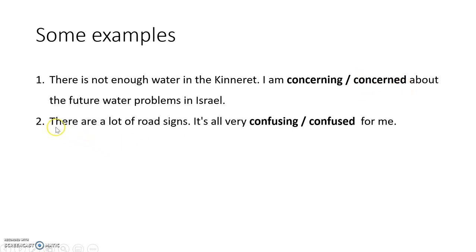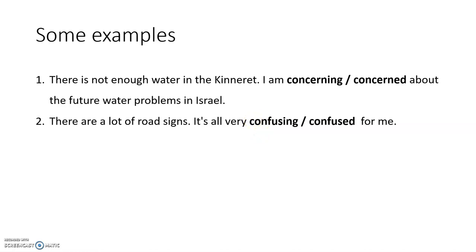In this one, there are a lot of road signs. It's all very confusing — or confused for me? So we have to look and say: what does 'it' refer to? It refers to the situation of many, many road signs. And what do all of those road signs create? They are confusing. I am confused.